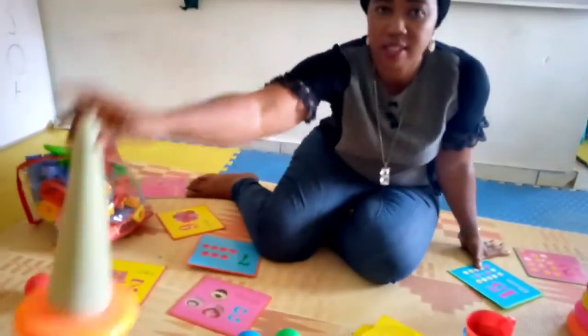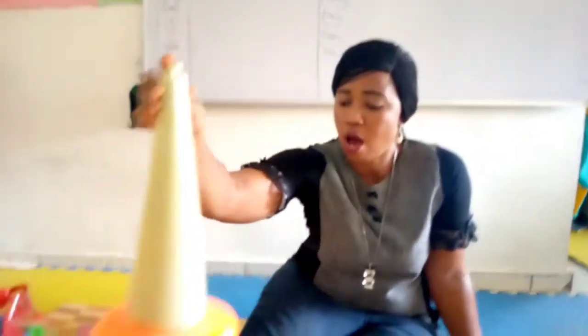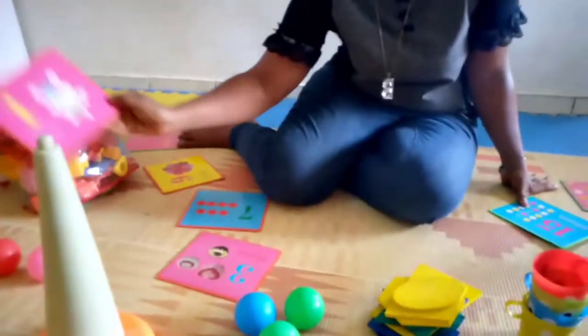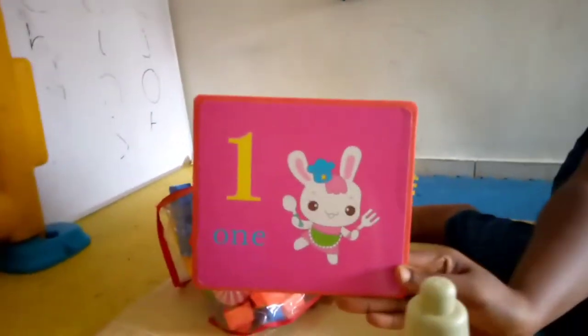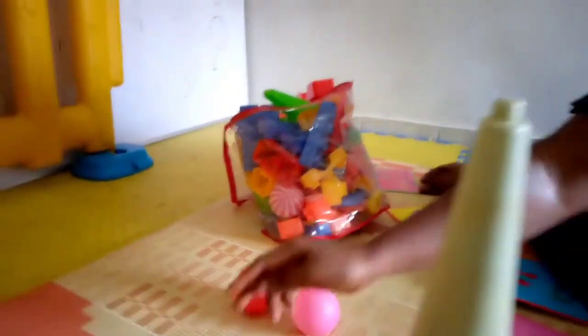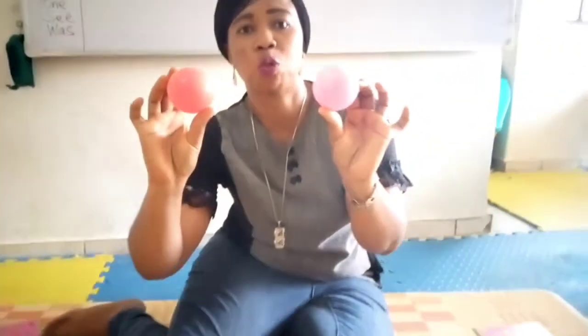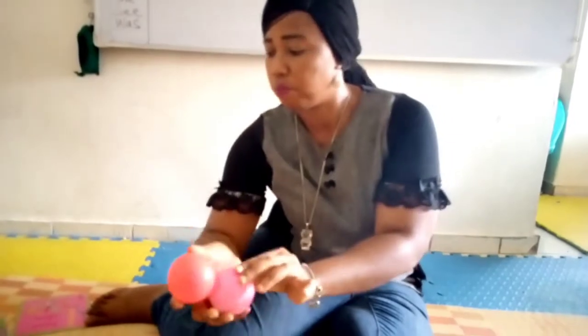Alright, 1. Let's look for a flash card that shows 1. Beautiful. Then we have 2 balls. 1, 2. 2. Beautiful.